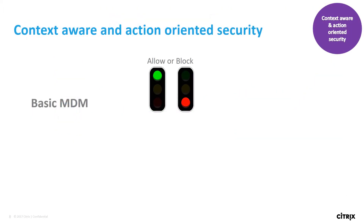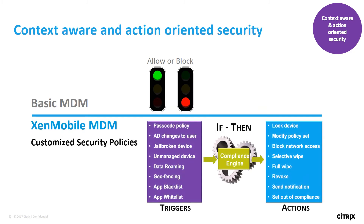In addition to greater network security, ZenMobile also adds greater security to your EMS and Office 365 deployments through greater device security. ZenMobile MDM can function as an automated compliance engine, where you set triggers or rules that might get broken, and actions that can be taken if that rule or parameter is broken. There are many possible combinations allowing IT to dial in just the right level of security and control. For example, you could set a trigger for geofencing with an action of blocking network access if the user moves outside the defined area, which could be off the campus or outside the country.